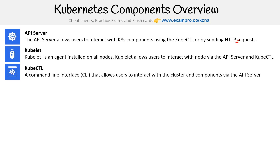We have kubectl — a command-line interface that allows users to interact with the cluster and its components via the API server. The CTL stands for controller, and CTL is very common to put after a name for a tool used for controlling things via CLI. We spend tons and tons of time with kubectl, so you will know it inside and out by the end of this course.